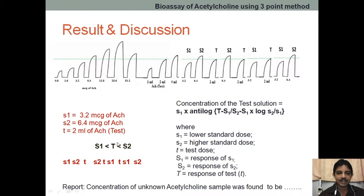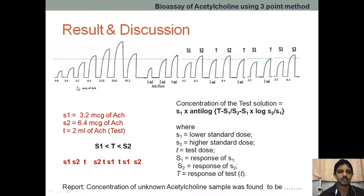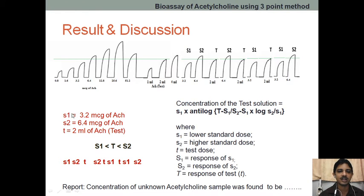The T response should be in between S1 and S2. For example, S1 is 3.2 micrograms of acetylcholine. Looking at the heights, the T height is in between S1 and S2. Because the next response after S1 should be S2, we have taken three responses — the 2 ml response whose height is in between S1 and S2. So this is our T response.